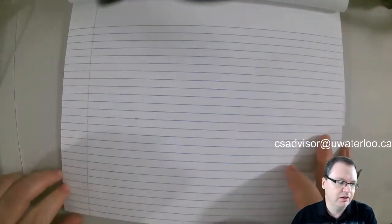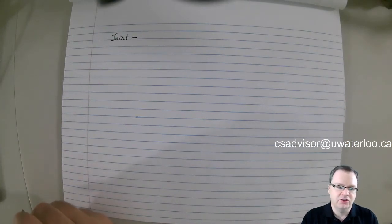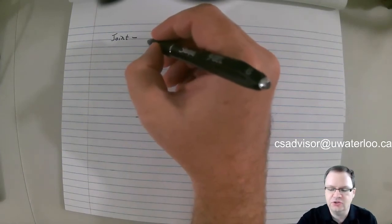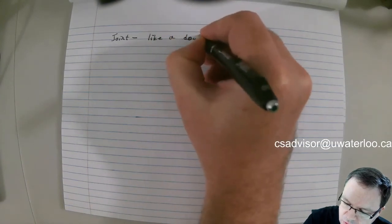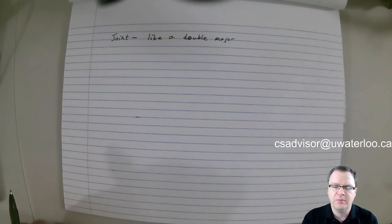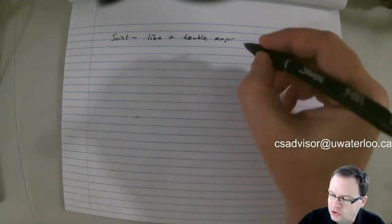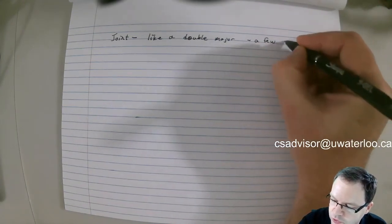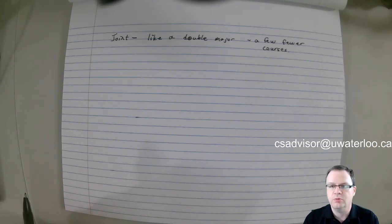Let me say a little bit about joint degrees. A joint is sort of more related to doing a double major — the idea is you're interested enough in two things to want to major in both of them. You would always do joint CS along with something else. A double major, if you're majoring in two topics that are not closely related, will require a lot of courses and may mean you have to be here longer than the standard eight terms. A joint is like saying I'd like to do a double but I don't want to be here the extra time. So it's like a double, but with a few fewer courses — for CS that would be three fewer.